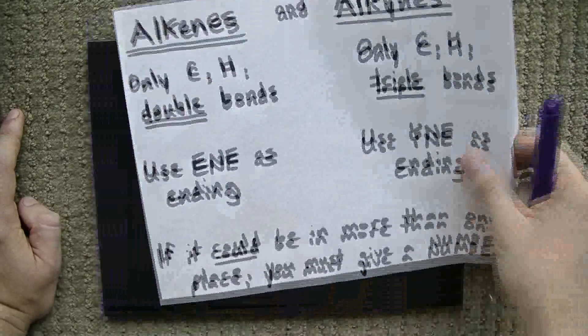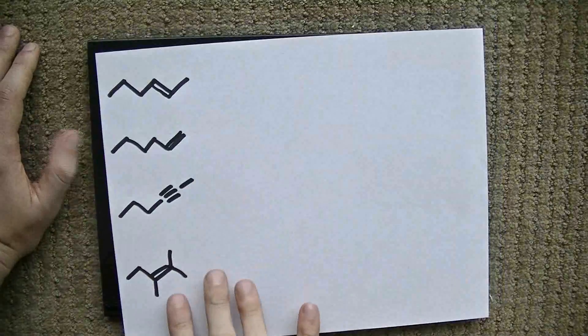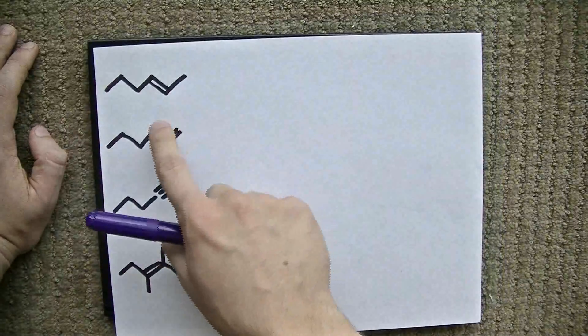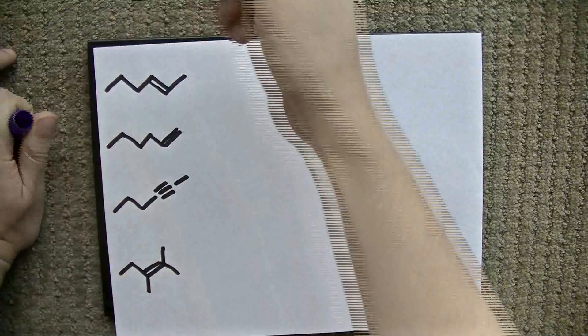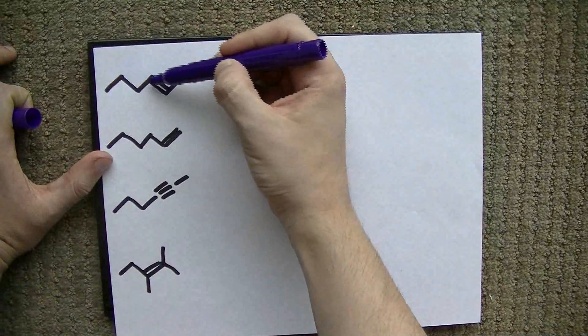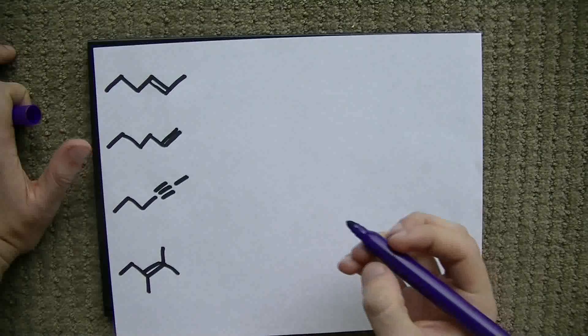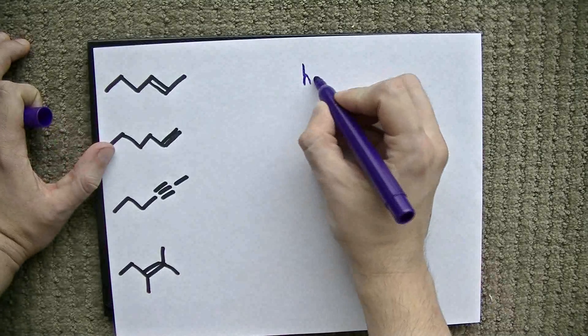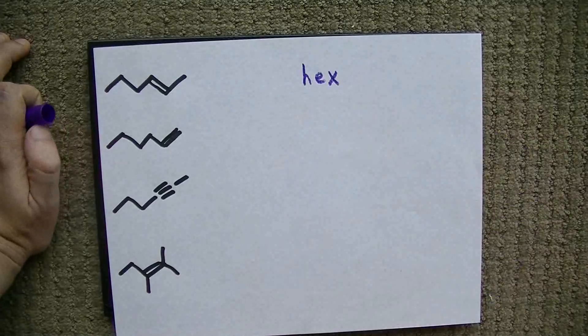Here's an example. We're going to name these together. First one here is 1, 2, 3, 4, 5, 6 carbons long. So, that means we need hex for 6.